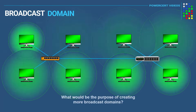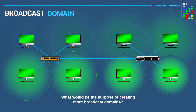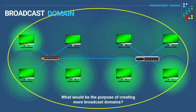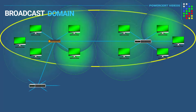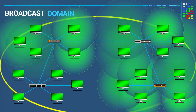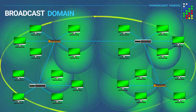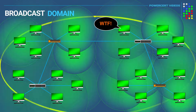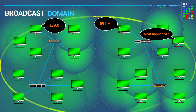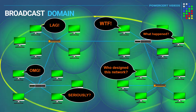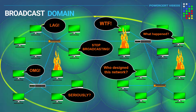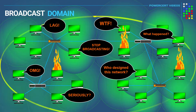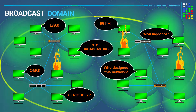You might wonder what the purpose of creating more broadcast domains would be. Having one broadcast domain on a small network wouldn't be a problem. However, if the network were to expand by adding a lot more computers, each one of those computers is going to be broadcasting and receiving broadcasts from every other computer on the network. When this happens it would slow down the network because of the tremendous amount of broadcast traffic — bandwidth will suffer. The way to fix this is by creating smaller broadcast domains by adding routers.